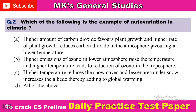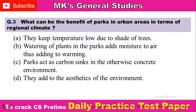Next question: Which of the following is an example of auto variation in climate? Option A: Higher amount of carbon dioxide favors plant growth, and higher rate of plant growth reduces carbon dioxide in the atmosphere, favoring a lower temperature. Option B: Higher emission of ozone in the atmospheric layer raises the temperature, and higher temperature leads to reduction of ozone in the troposphere. Option C: Higher temperature reduces the snow cover, and lesser area under snow increases the albedo, thereby adding to global warming. Option D: All of the above. So comment your answer here.